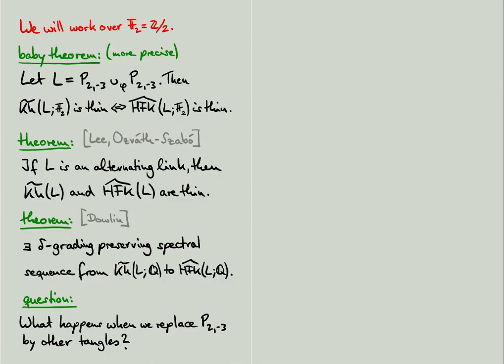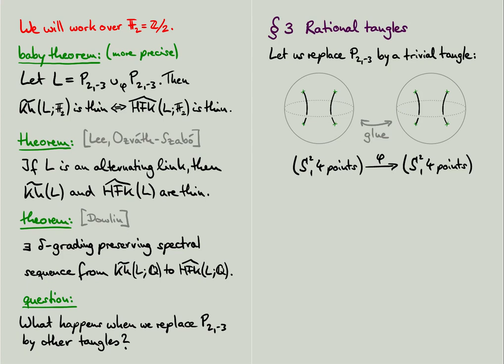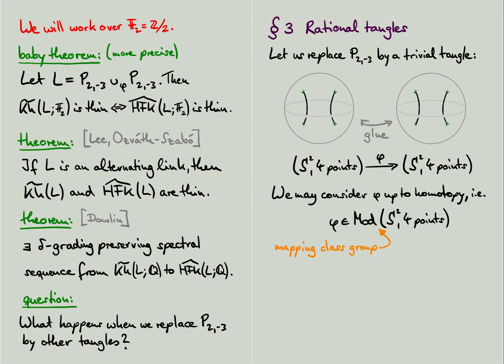We start by considering the following simplification of the problem. Let us replace the 2-3 pretzel tangle by a trivial tangle and see what happens. So we take two copies of the trivial tangle and glue them together using some map phi, identifying the two boundary spheres. Observe that a link obtained by gluing any two Conway tangles together like this only depends on the map phi up to homotopy.